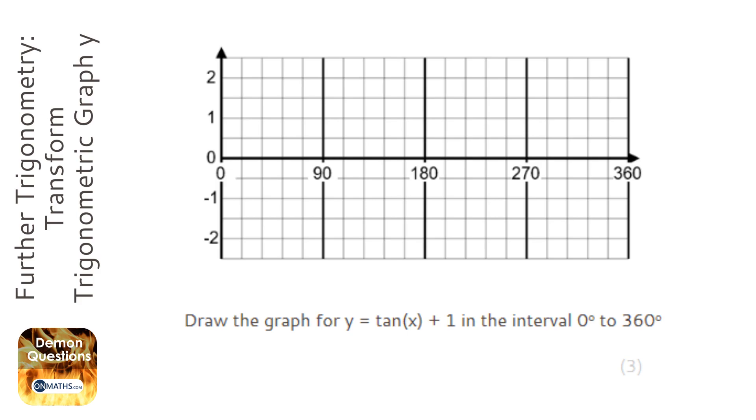Okay, so we're going to draw the normal tan graph, but then we're going to add one to it. So what that's going to do is we're constantly one above where we think we are.